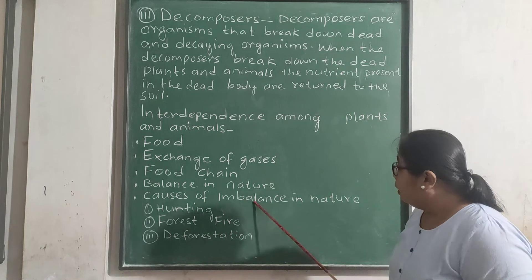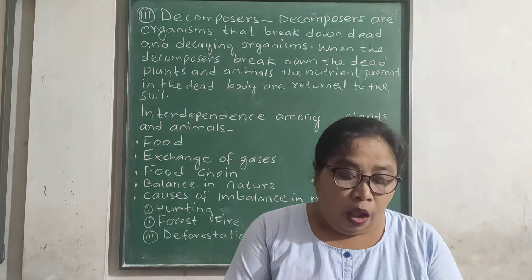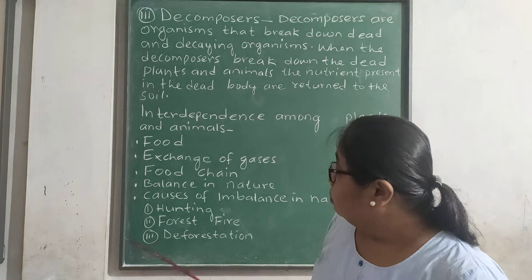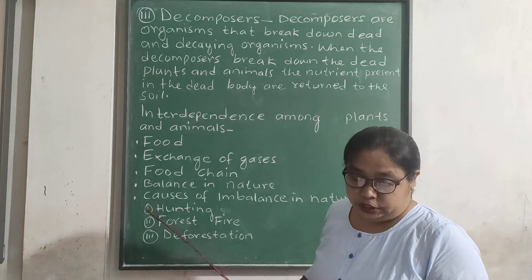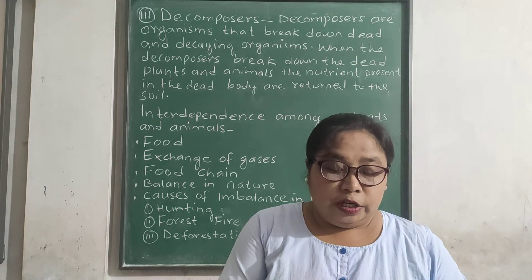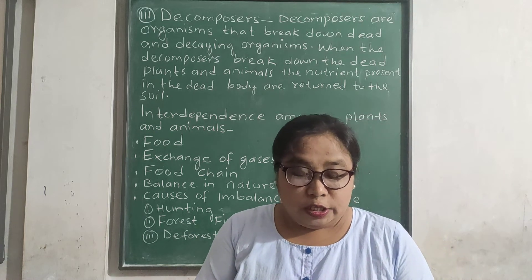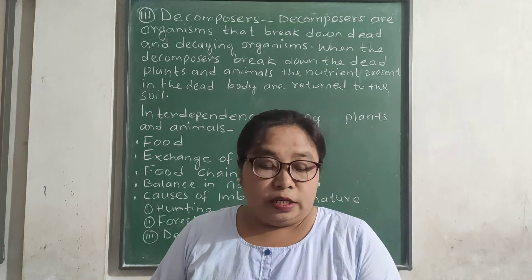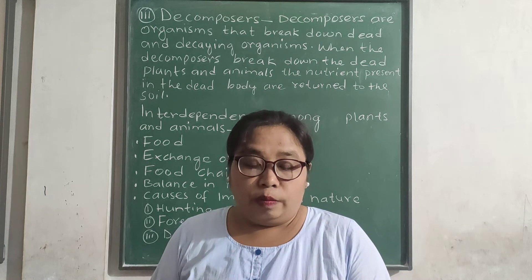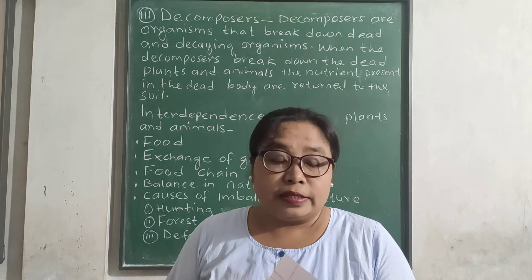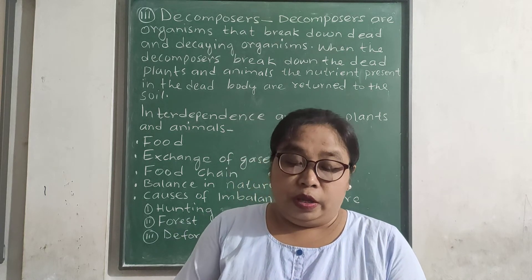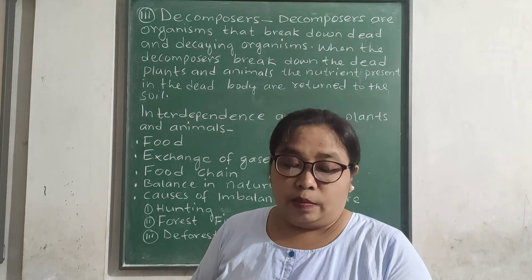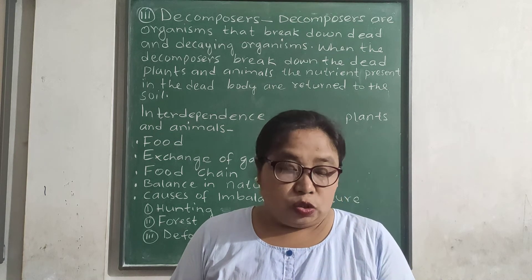Now let us discuss causes of imbalance in nature. Number one: hunting. Animals are hunted for their skin, meat, and bones. Due to this, many animals are extinct and some are endangered, which causes disturbance in the food chain. They are killed for making clothes, bags, medicines, and decorative items, resulting in excessive hunting as demand for these items is high in the market. This killing of animals is called poaching.